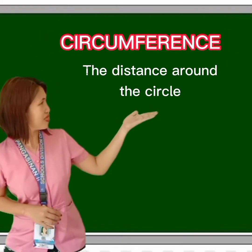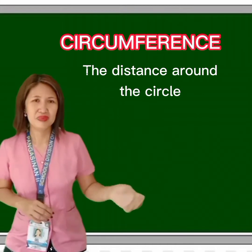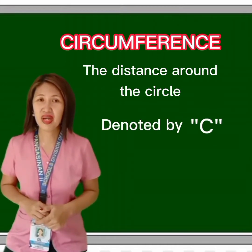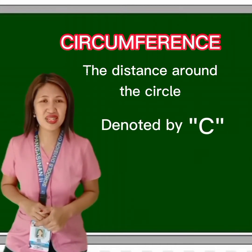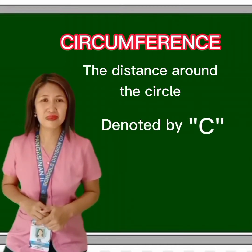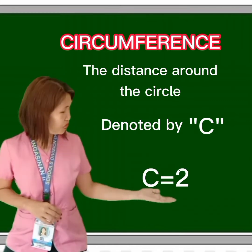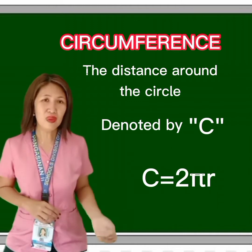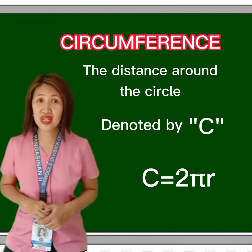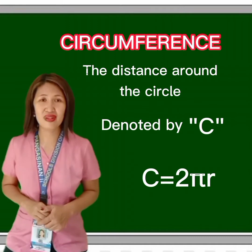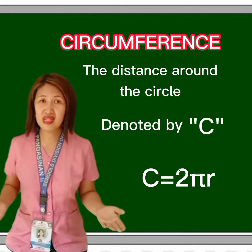The formula for circumference is 2πr, or circumference equals 2 times pi times r. That is the circumference of a circle.